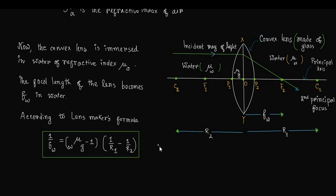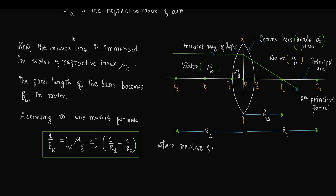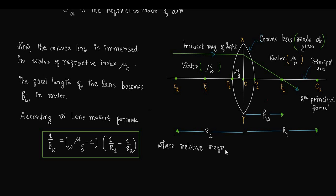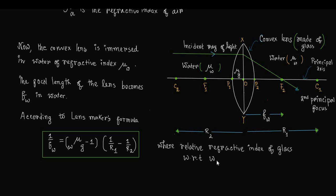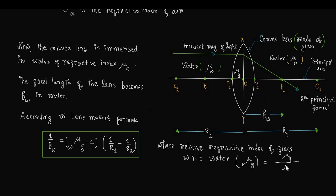So 1/Fw = (w_mu_g − 1) × (1/R1 − 1/R2), where the relative refractive index of glass with respect to water is w_mu_g = mu_g / mu_w.